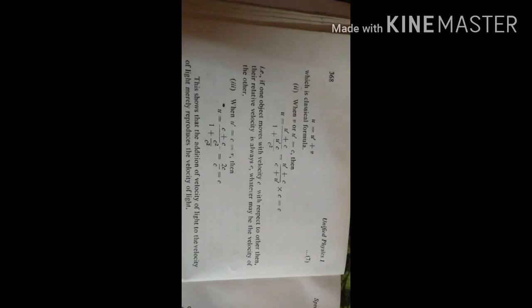When V or U' equals to c, then U equals to U' plus c, divided by 1 plus U'c by c square. That is, if one object moves with velocity c with respect to another, then their relative velocity is always c, whatever may be the velocity of the other. When U' equals to c and V equals to c, then U equals to c plus c divided by 1 plus c square by c square, that is, c. This shows that the addition of the velocity of light to the velocity of light merely reproduces the velocity of light.